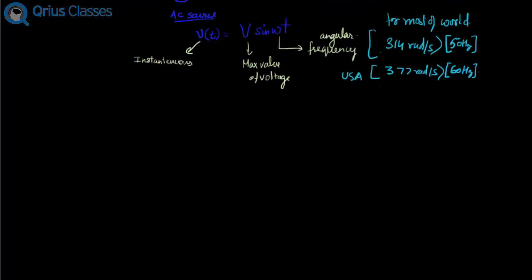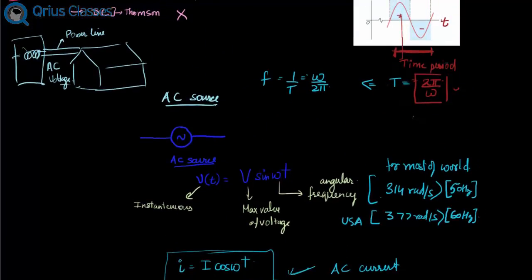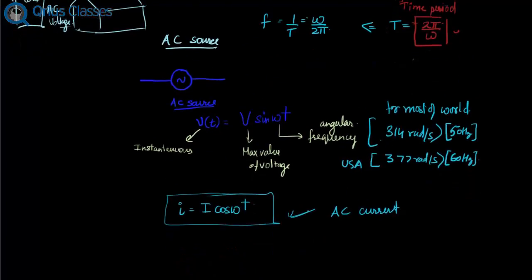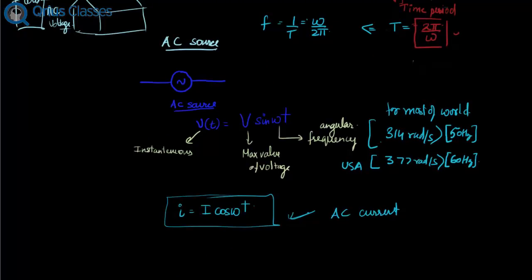Similarly, the current for any circuit due to the AC source can also be written as I equals I_m cosine of Omega t. This is also a sinusoidal current, and we can see that I varies sinusoidally with time. So AC source produces sinusoidally changing voltage with time which, if applied across a circuit having a resistance, can produce AC current in the circuit.